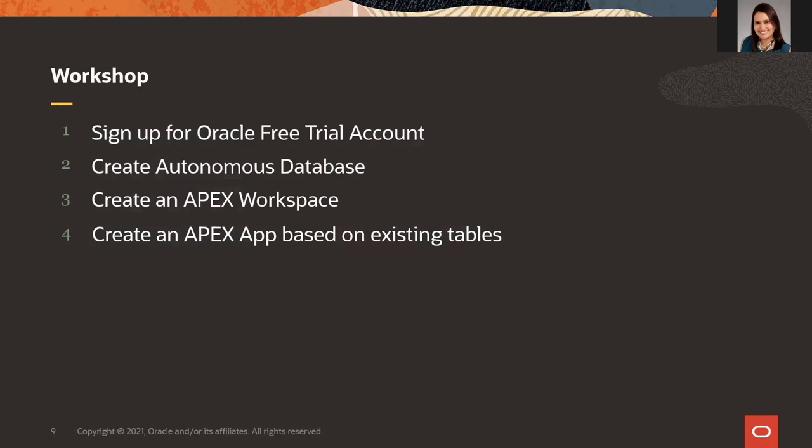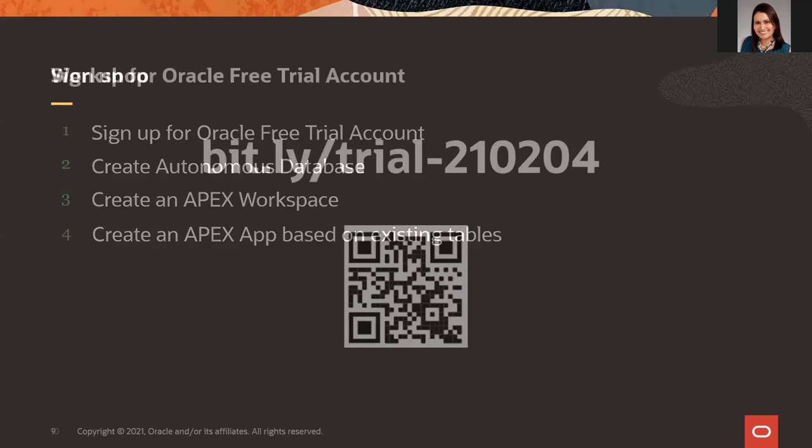Now let's move on to the workshop. The first thing you need to do is to sign up for an Oracle free tier account, and probably you already have done this step. In the next slide I will share the link to create your free tier account. Secondly, you are going to create the autonomous database, create an APEX workspace, and finally create an APEX application based on existing tables.